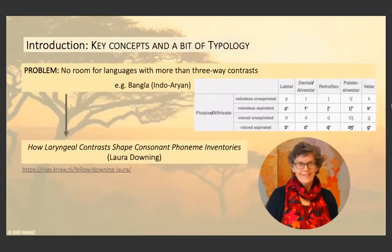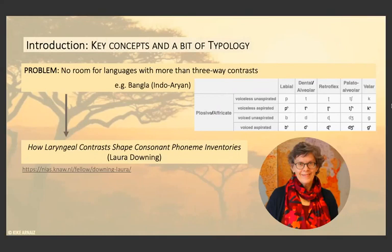The problem here is that this classification leaves no room for languages with more than a three-way contrast, such as Bangla, as we can see in that table, but also for languages that have different combinations of those contrasts. This was something that was researched by Laura Downing, who I think is here today. This presentation is heavily inspired by one of her talks that we had last year.